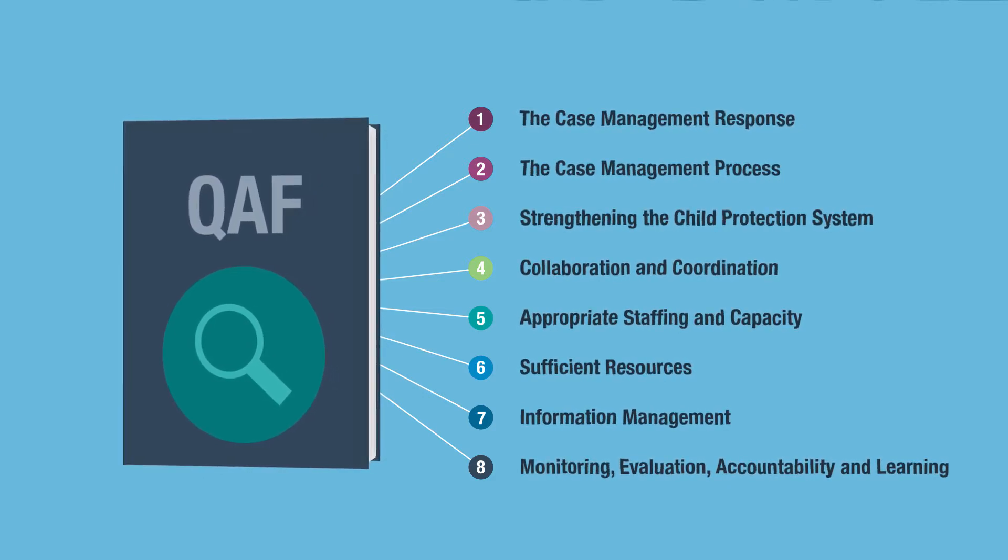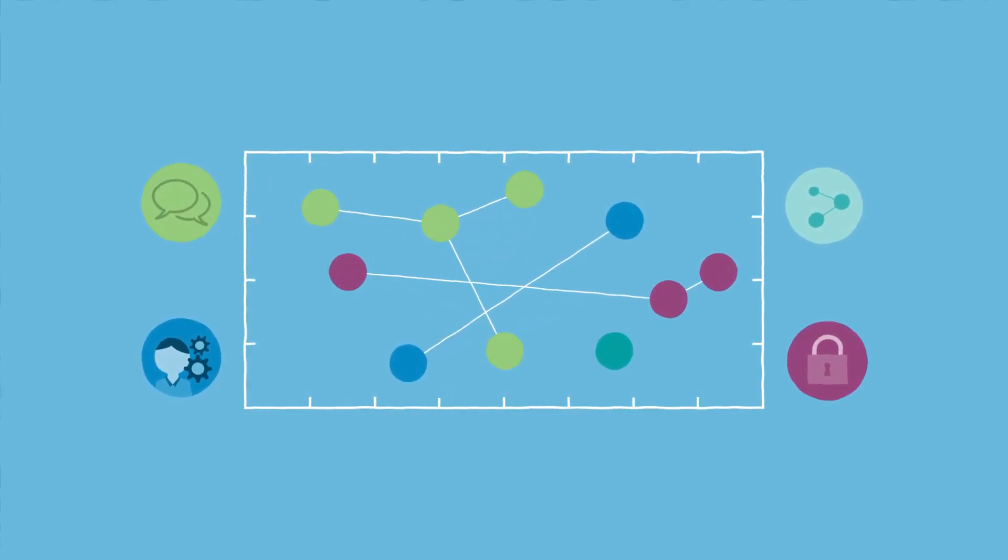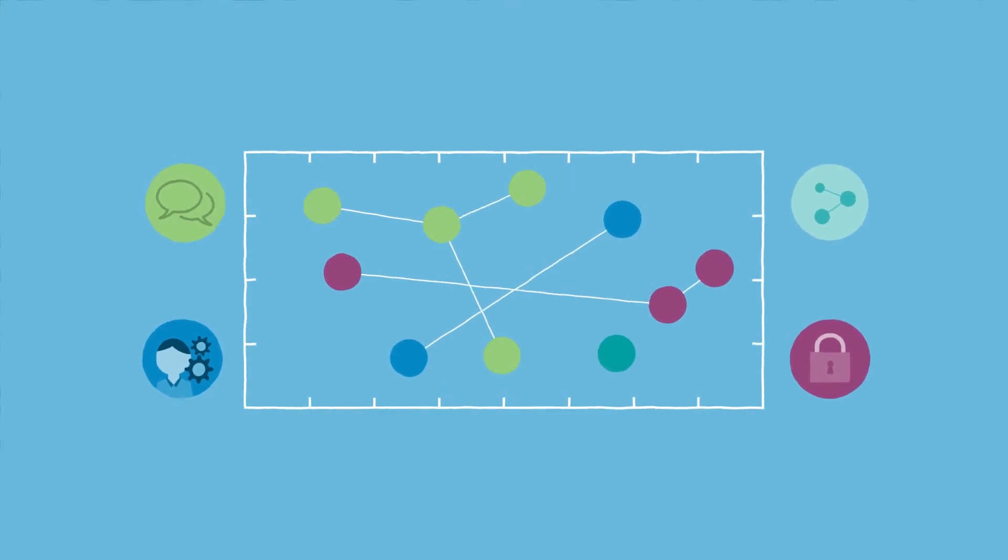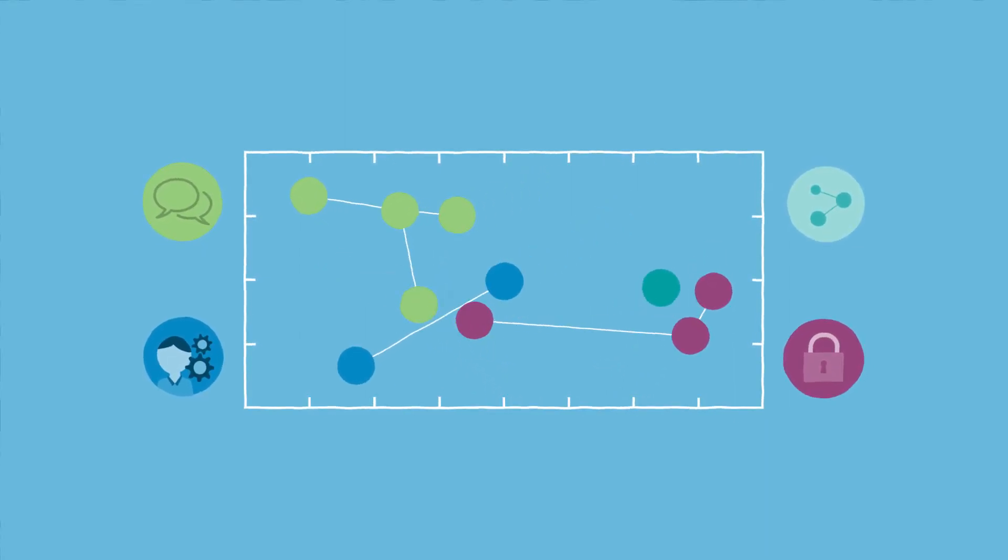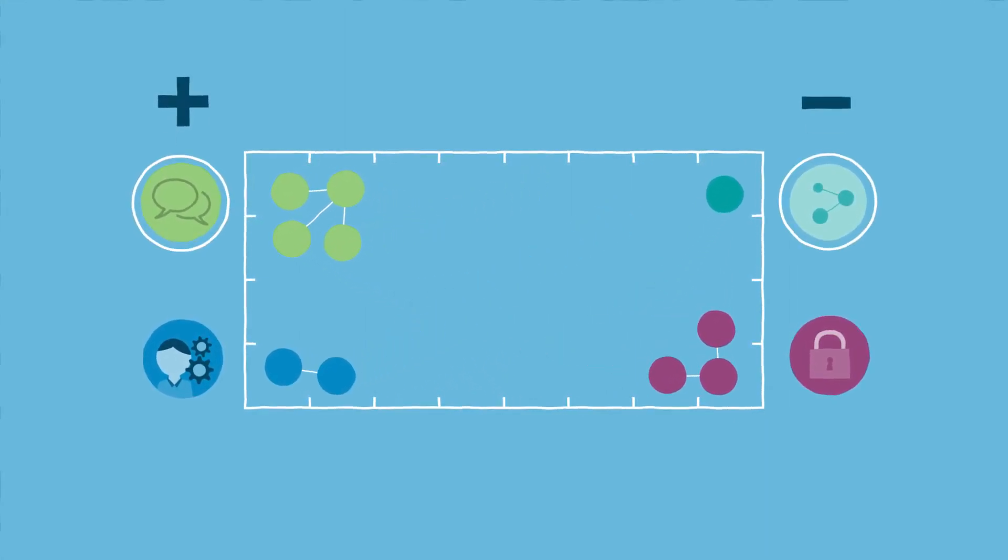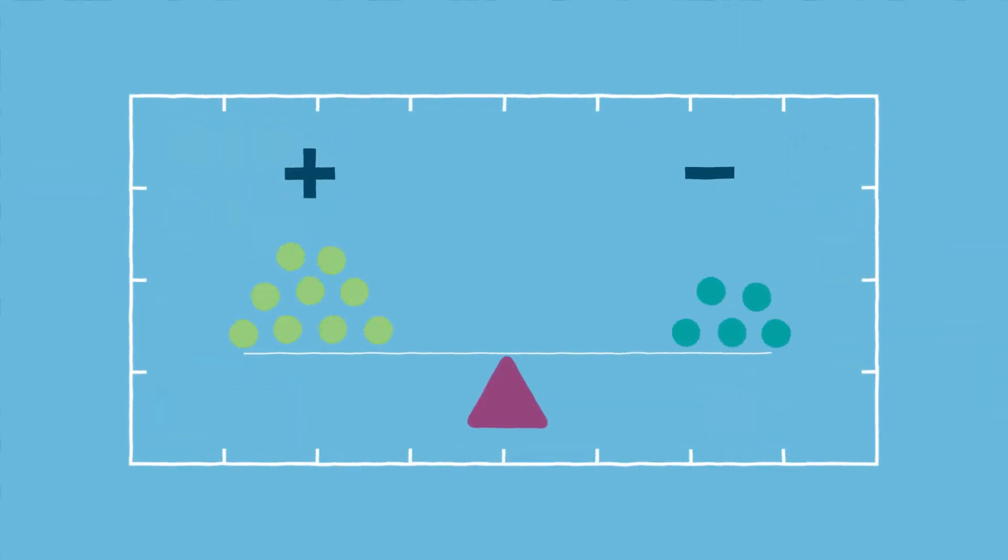The QAF takes into account that a case management response and system may still be in the early stages of development, especially during the onset of an emergency response. By identifying strengths and weaknesses, it provides guidance on how to improve the case management response and system and move to more developed stages and quality.